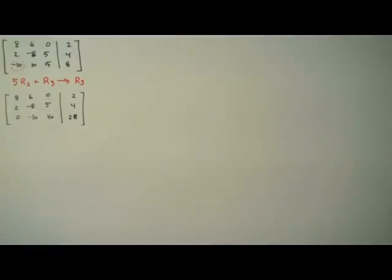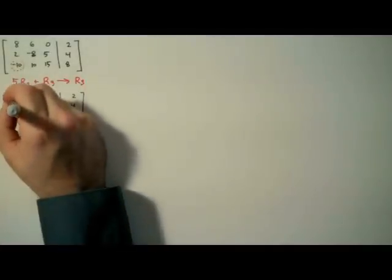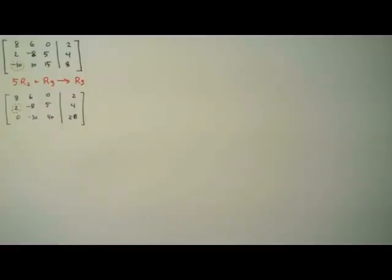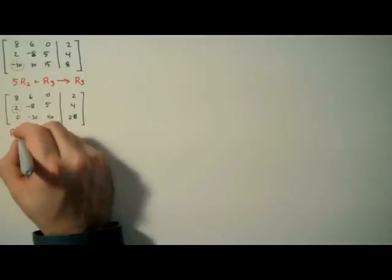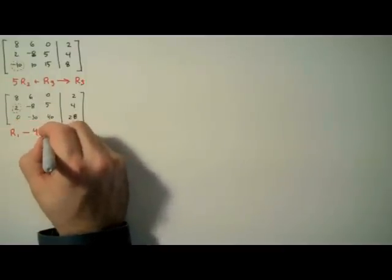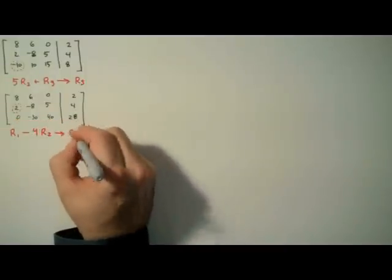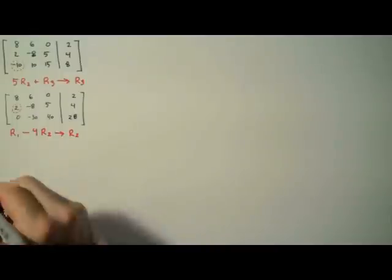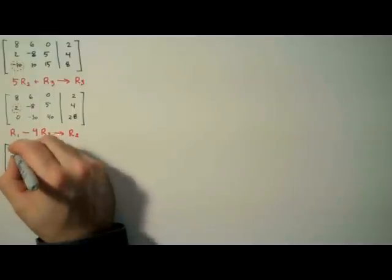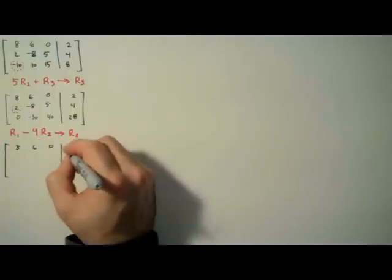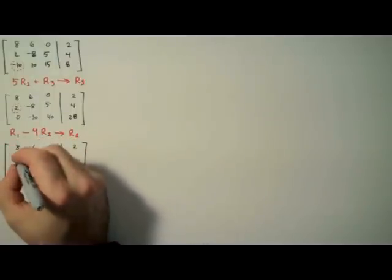Good. Now we're going to target the 2 above the 0. This 2 needs to be a 0 as well, and we'll accomplish that using row addition again. We'll take row 1 and subtract 4 times row 2, replacing row 2 with result. You say subtracting and I say adding a negative. Let's call the whole thing off.